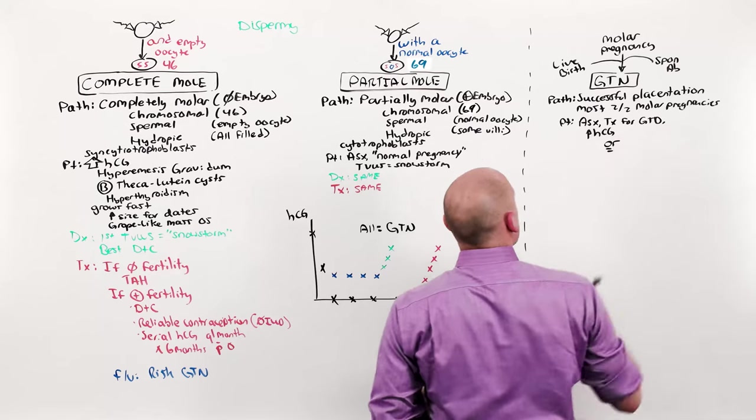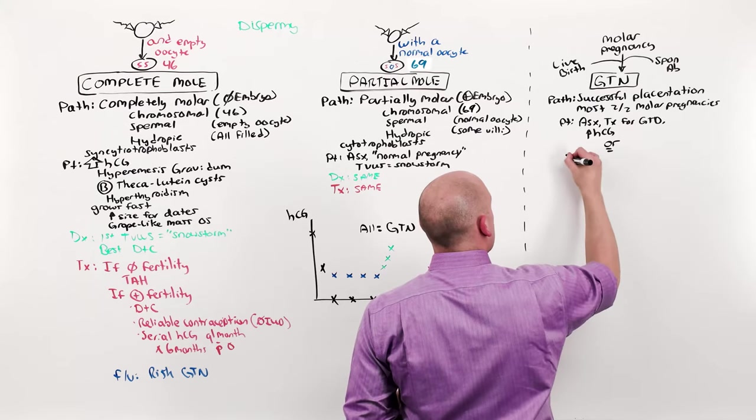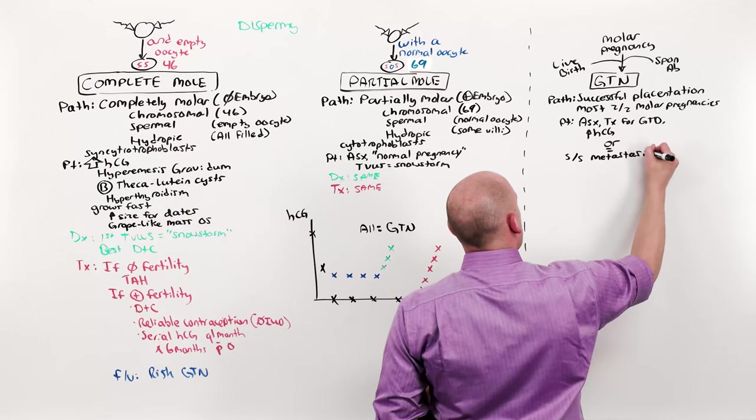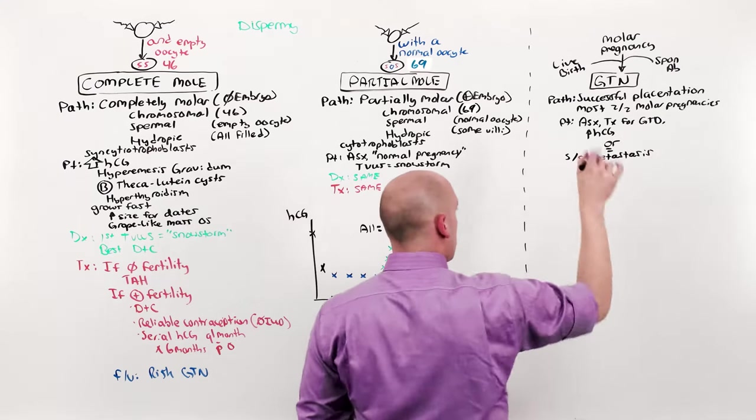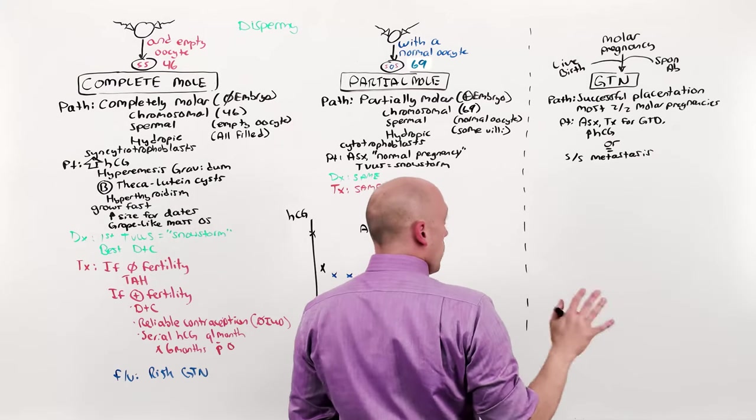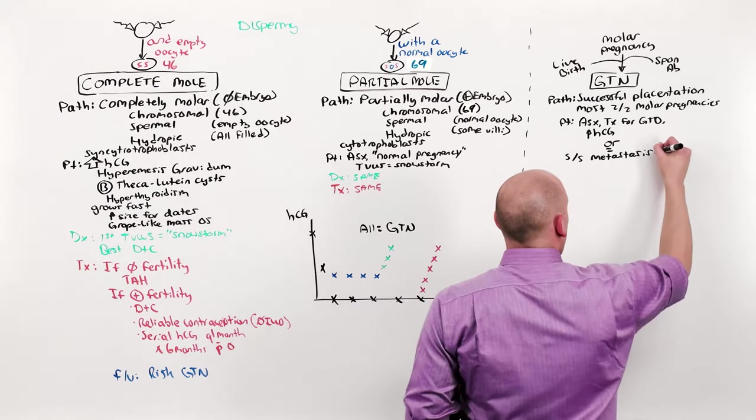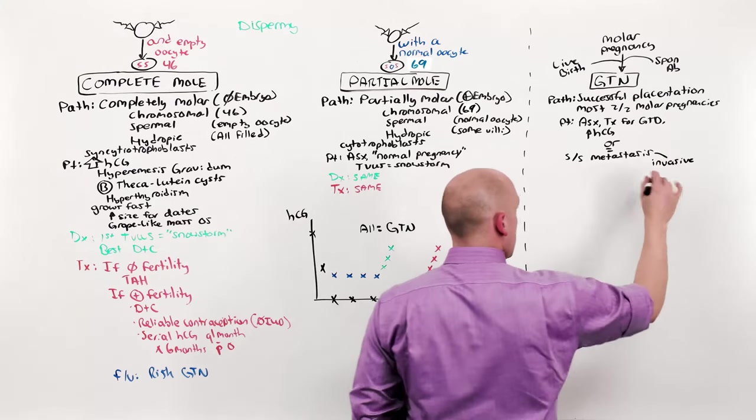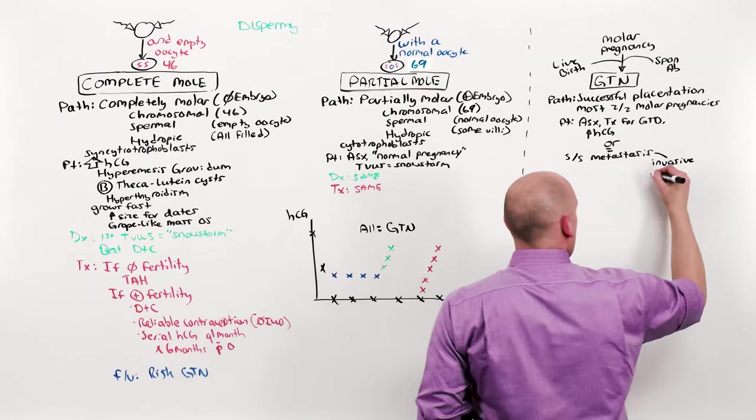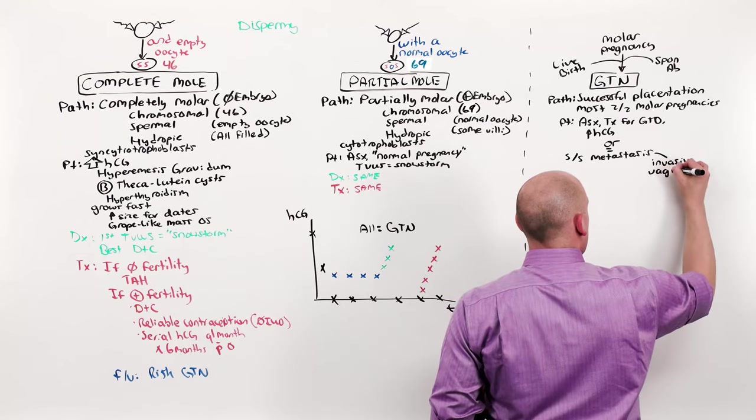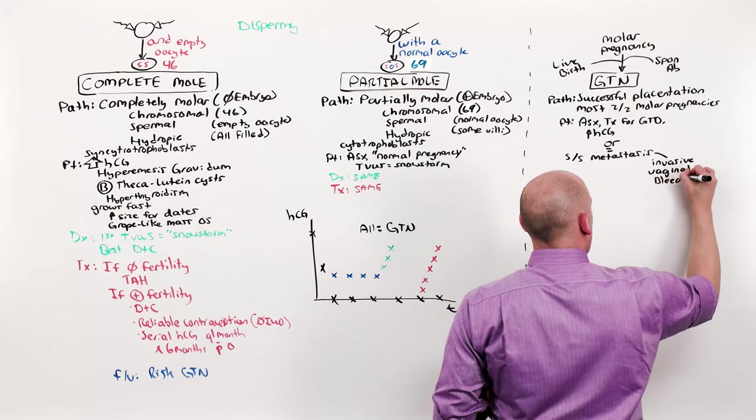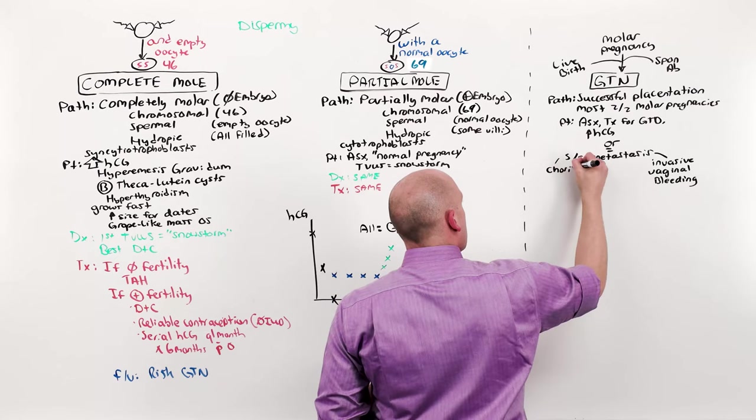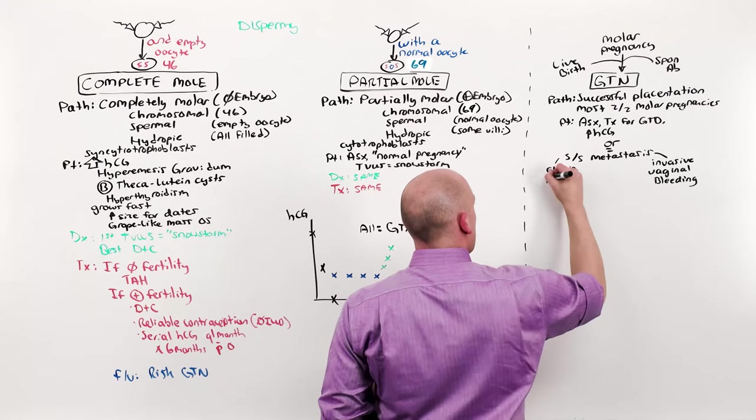Or, unless it gets out of control, there's going to be signs and symptoms of metastases. I do not want you learning the different types of GTN, but the two you should be aware of are going to be the locally invasive mole that does not metastasize but burrows into the uterus. This is going to present with vaginal bleeding. And choriocarcinoma, which loves to go to the lungs, which will present with hemoptysis.